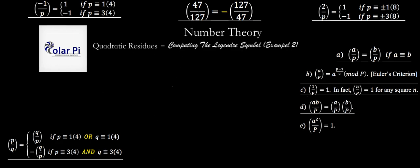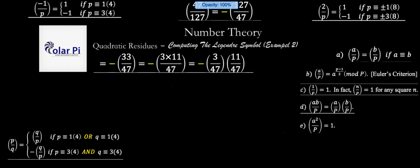Therefore, 47 over 127 is going to equal negative 127 over 47. And what we're going to do next is reduce 127 mod 47. And 127 is the same as 33 mod 47. So we start with 33 over 47 in place of 127 over 47.